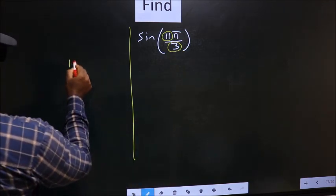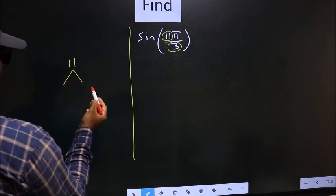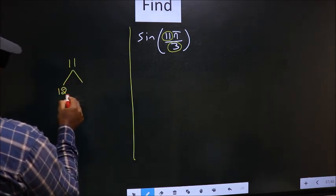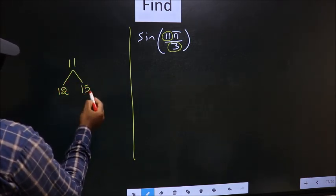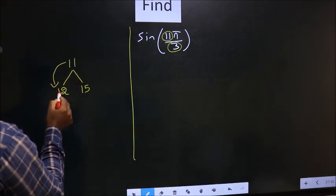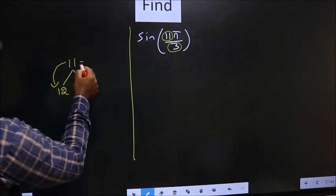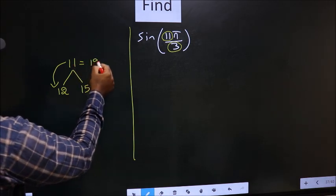So here we have 11. Multiples of 3 are 12 and 15. 11 is close to 12. So 11 should be written as 12 minus 1.